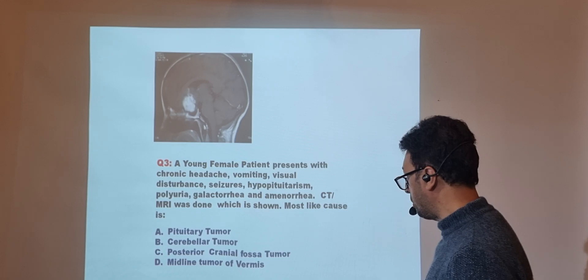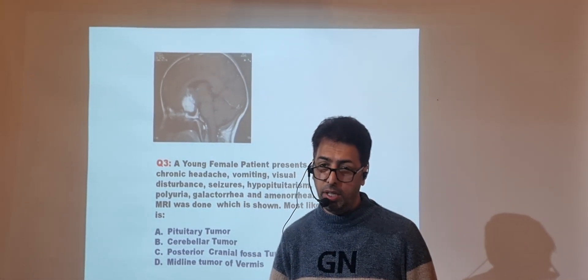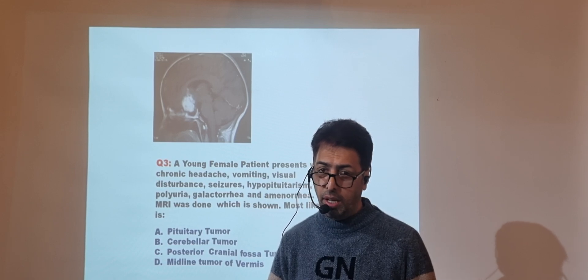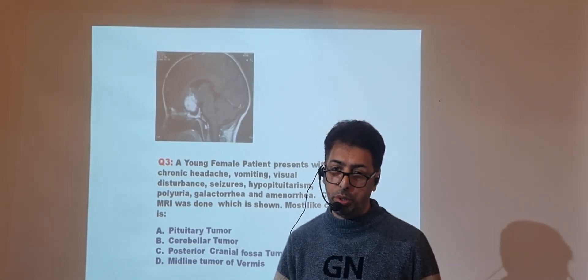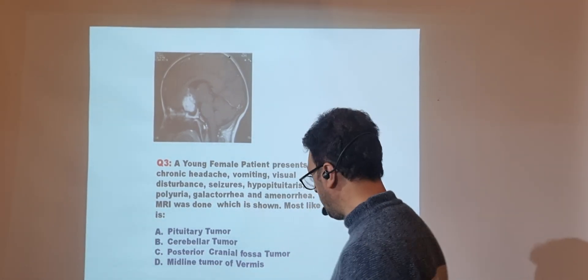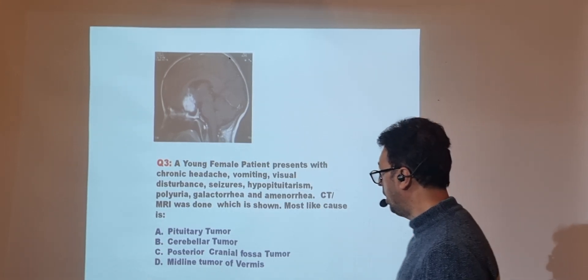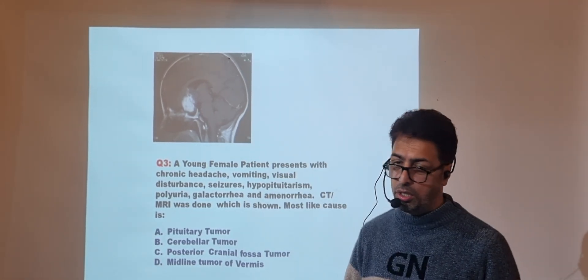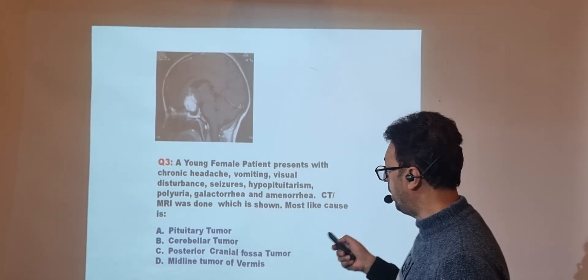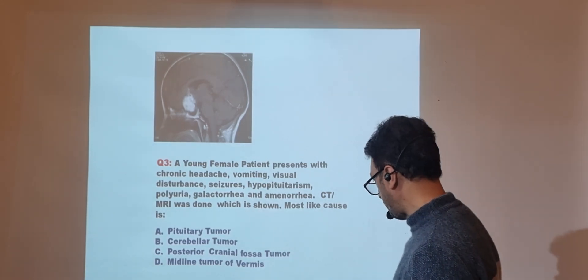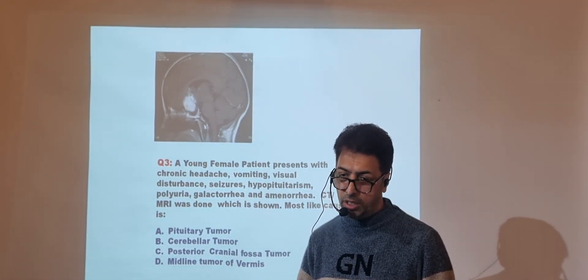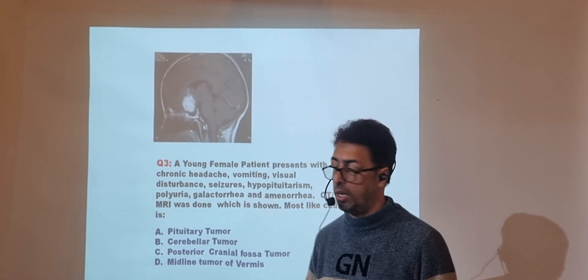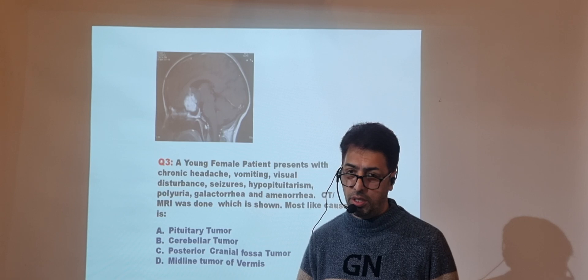Seizures are common. The patient also has hypopituitarism, polyuria, galactorrhea — excessive milk expression through the breast — and amenorrhea, which are classic features of pituitary tumors. The cerebellum is in the posterior cranial fossa, which is not the location shown. The midline vermis is also cerebellar and doesn't match the localization shown here. The scan clearly shows the pituitary gland with a pituitary tumor, so the answer is pituitary tumor.